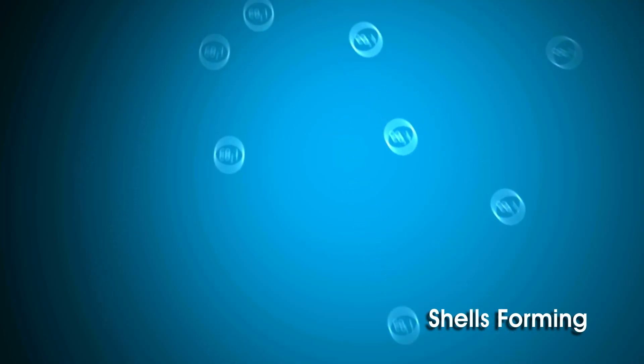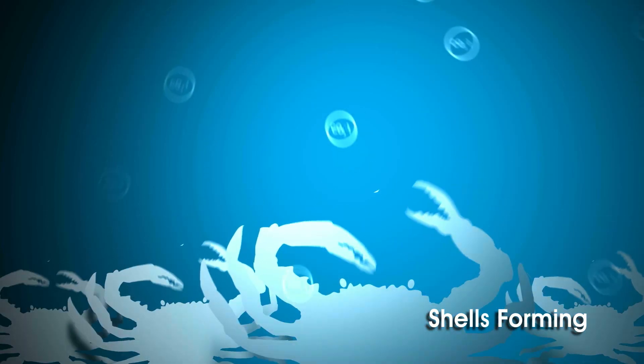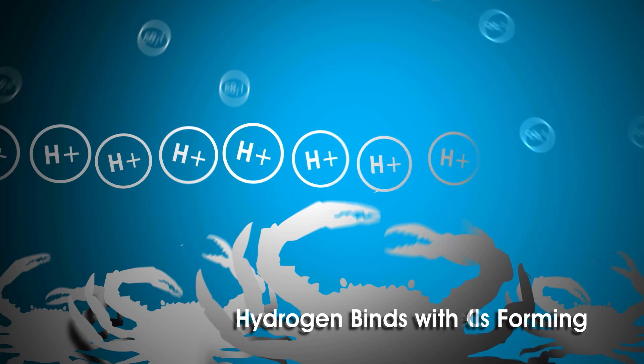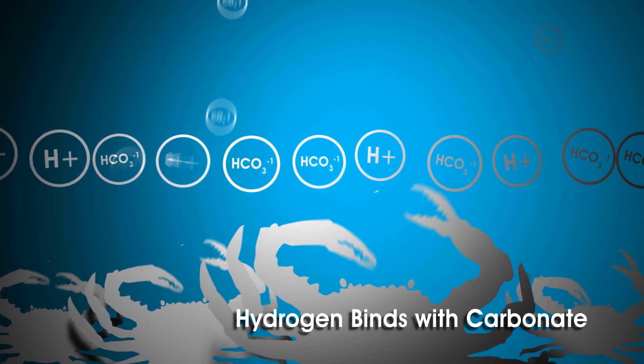Let's review. In a normal ocean, carbonate is taken from the water and combined with calcium to form the shells of many animals. In an acidic ocean, abundant hydrogen ions bind with carbonate and prevent shell formation.